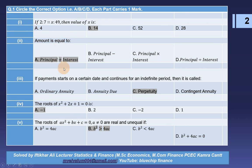Third MCQ: if payment starts on a certain date and continues for an indefinite period, then it is called a perpetuity. Fourth MCQ: the roots of X² + 2X + 1 = 0 — the first option is correct: minus 1.